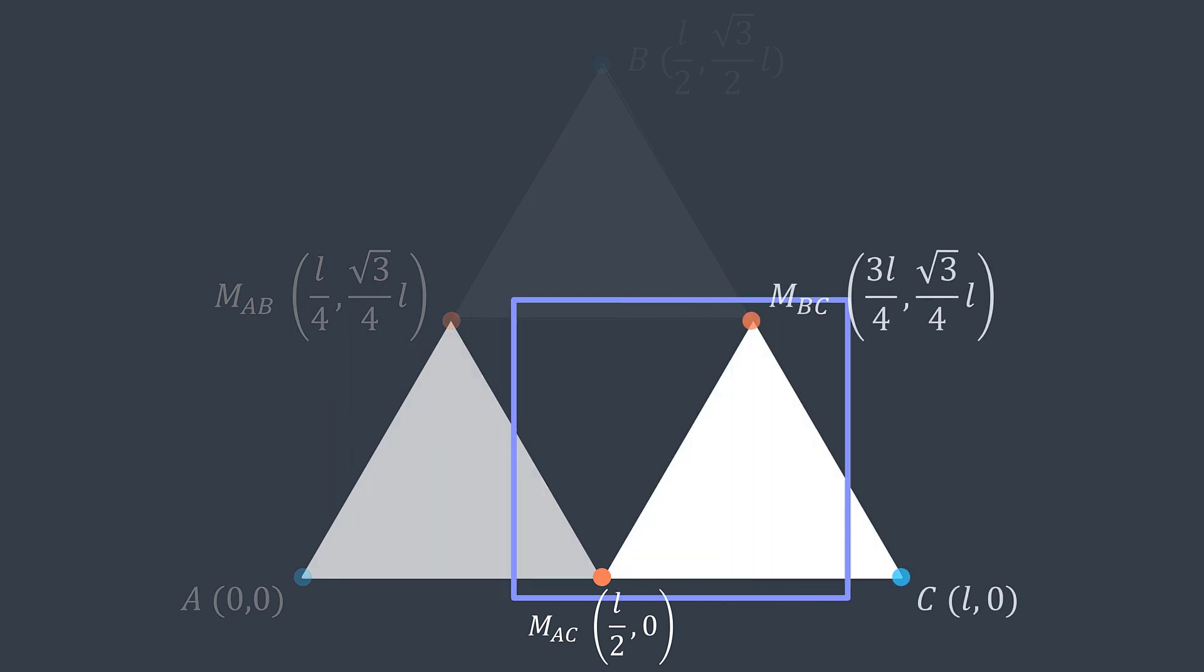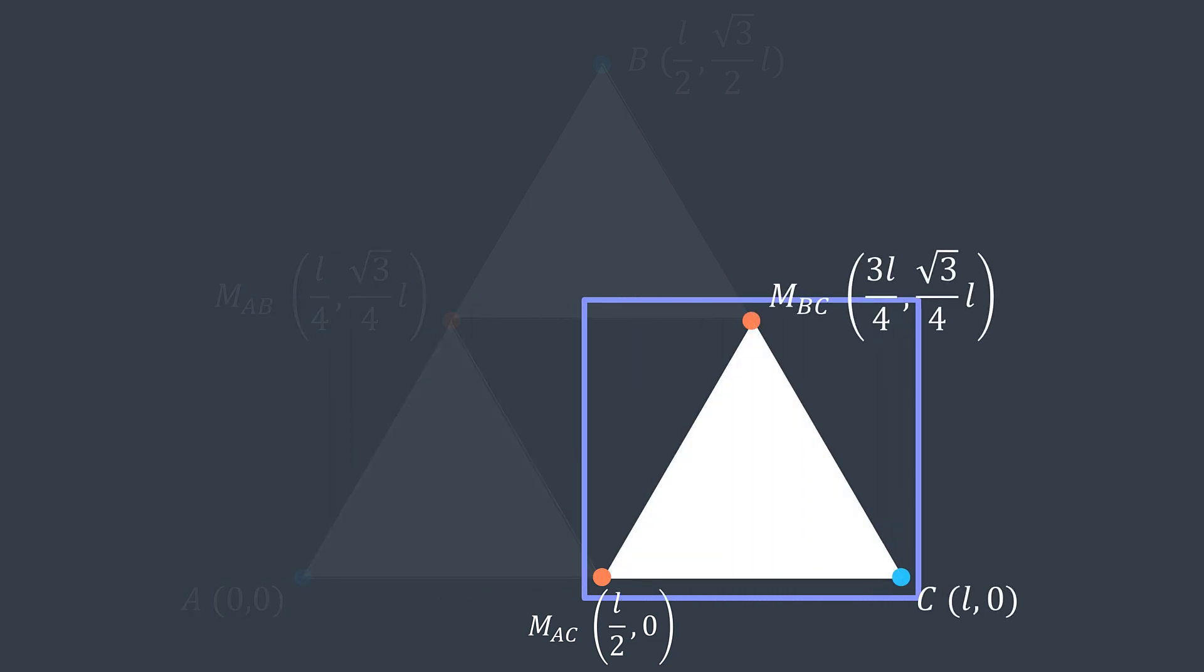And for the right sub triangle, A is midpoint AC, B is midpoint BC, and C remains C.